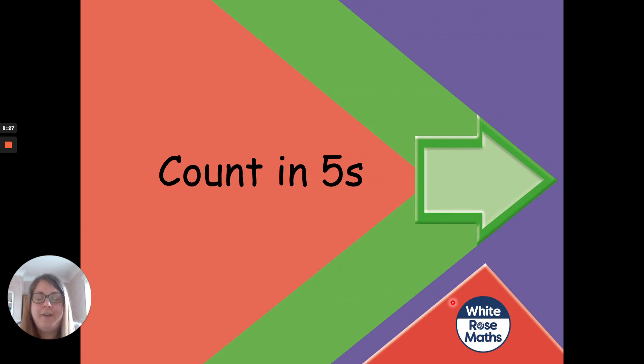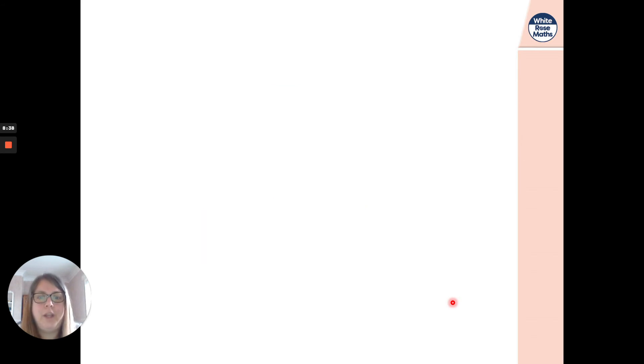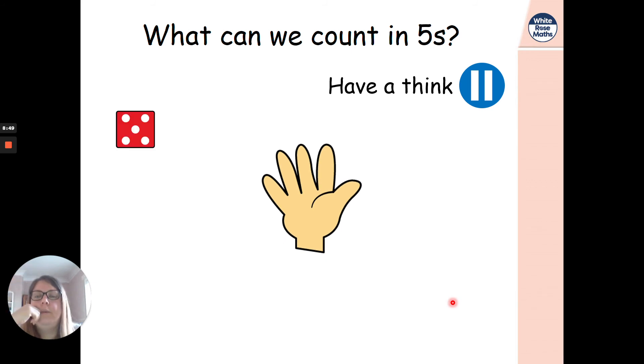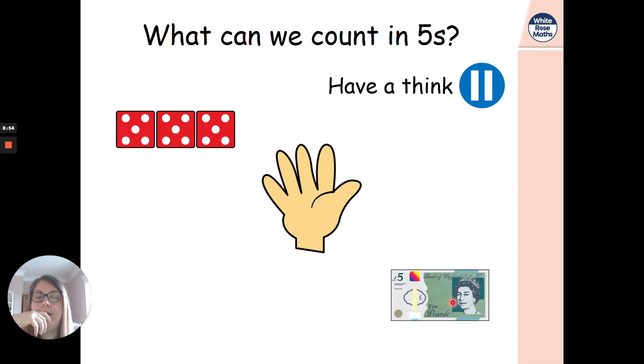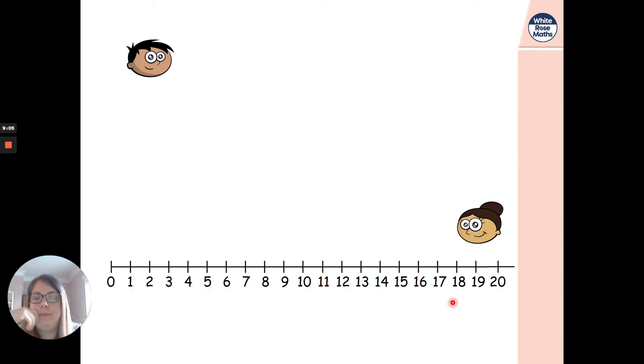Let's have a look at counting in fives then. Are we ready? 5, 10, 15, 20. Nice and simple. 5, 10, 15, 20. We'll start off simple and then work our way up. So what can we count in fives? Have a little think. What could we count in fives? We could count our fingers. We could count on a dice showing the number five. We could count a five pound note, which is what we're going to start looking at. We could count five pears in a bag. We could count five pencils in a pot. And we could count them in fives. Couldn't we? Are we ready?